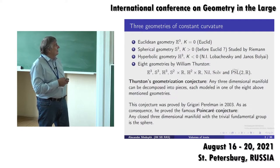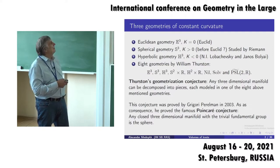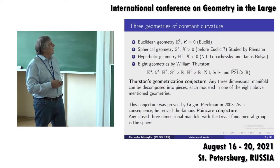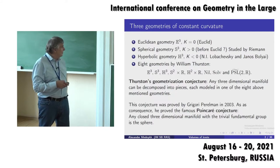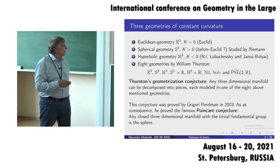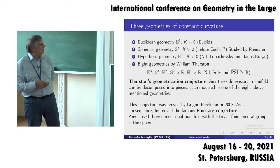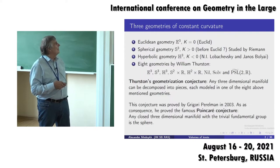Everybody knows that the first geometry was investigated by Euclid. The second was probably studied by Riemann, though it was known very many years ago because people used it in different fields related with surveying. There are more geometries in the three-dimensional case, all mentioned in the previous lecture. Thurston's geometrization conjecture is well known: any three-dimensional manifold can be decomposed into pieces, each modeled in one of the eight above-mentioned geometries.